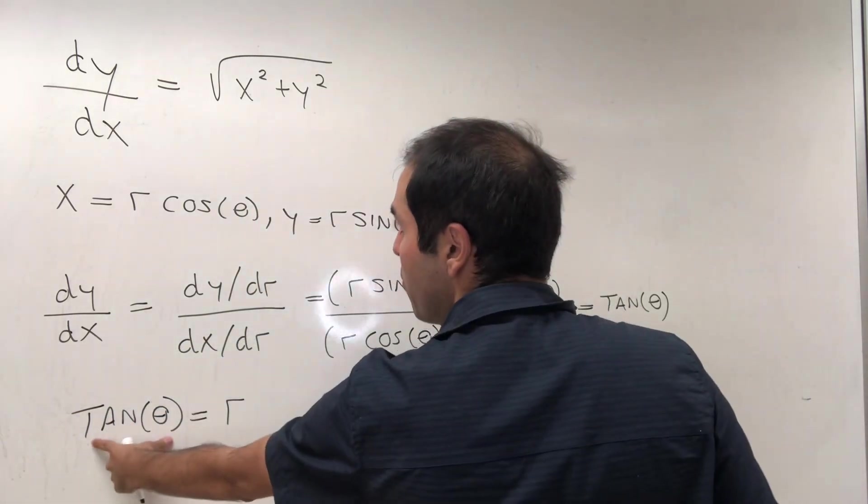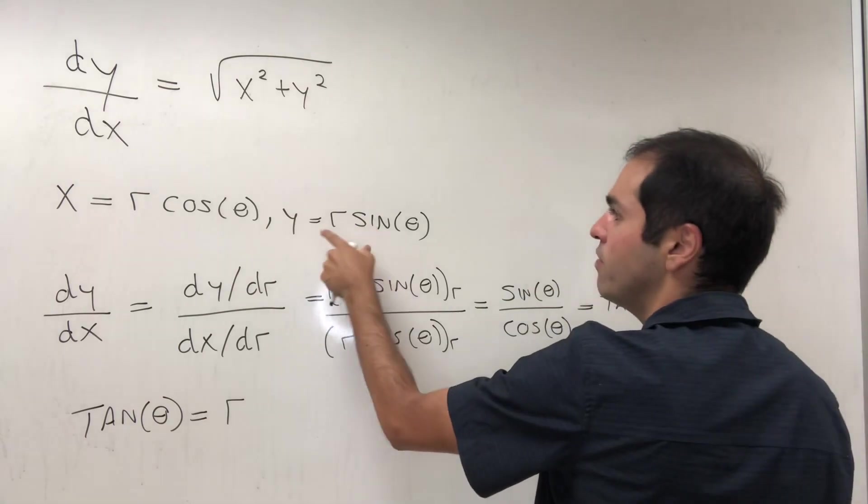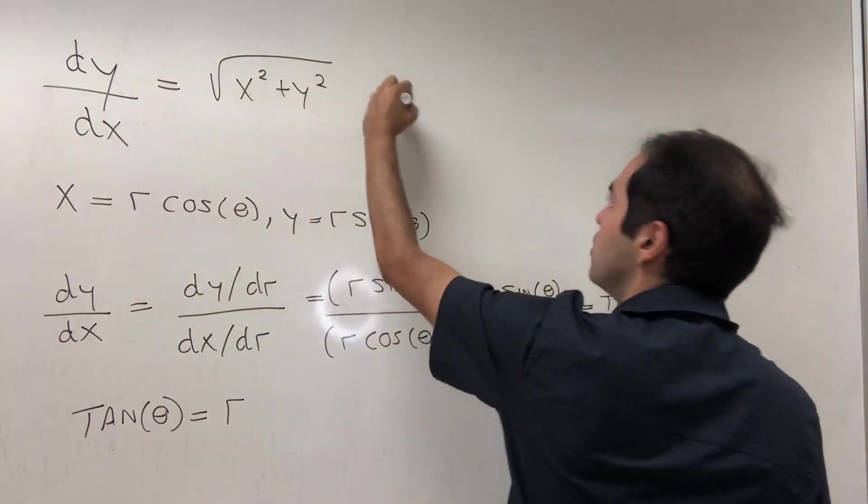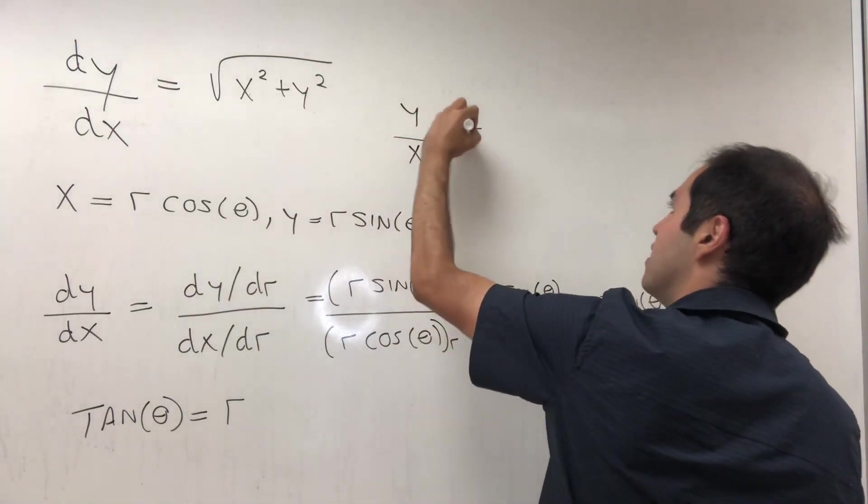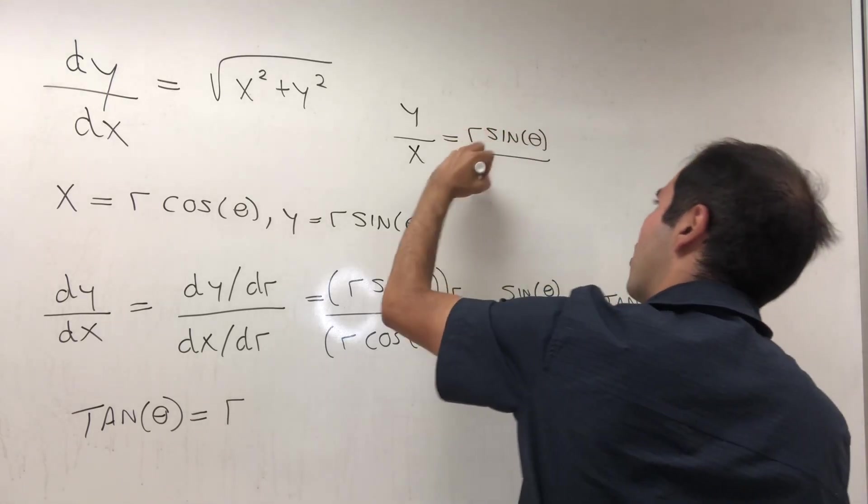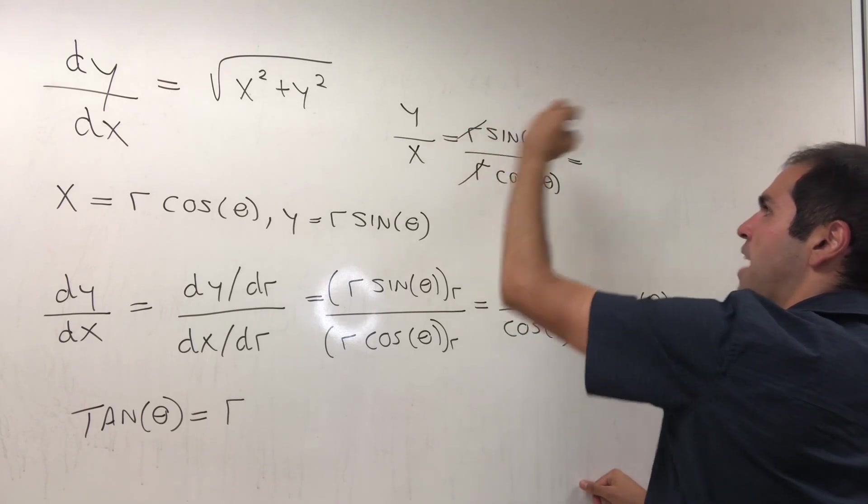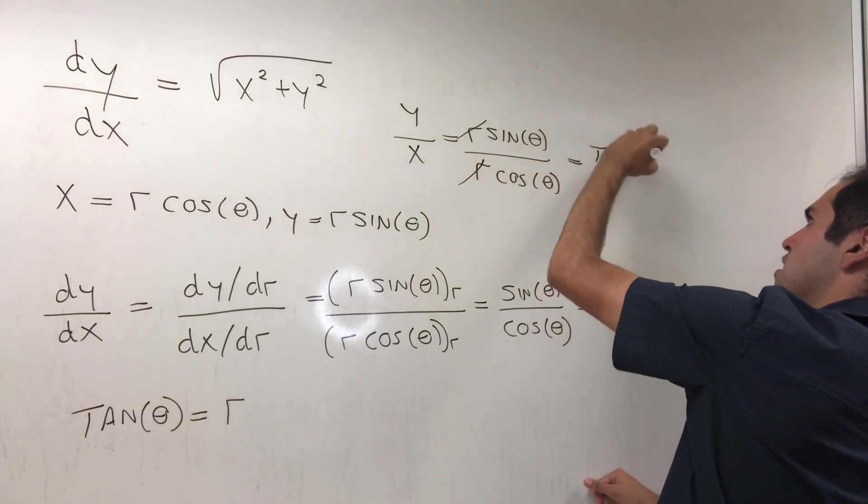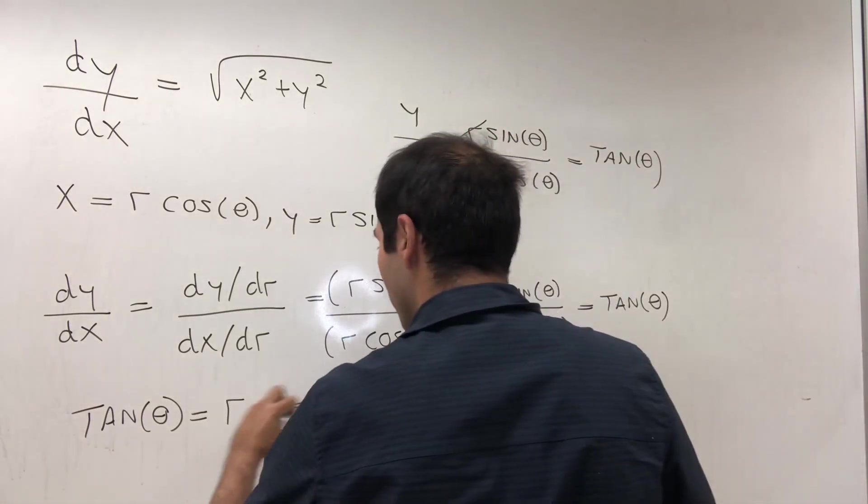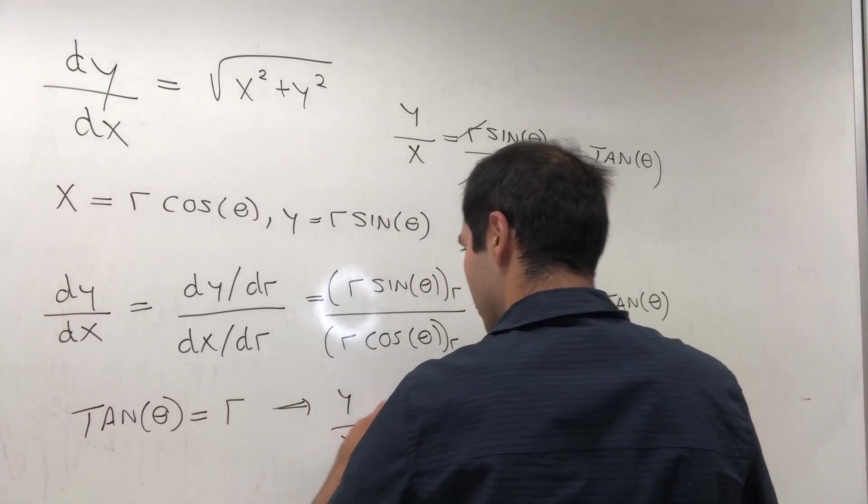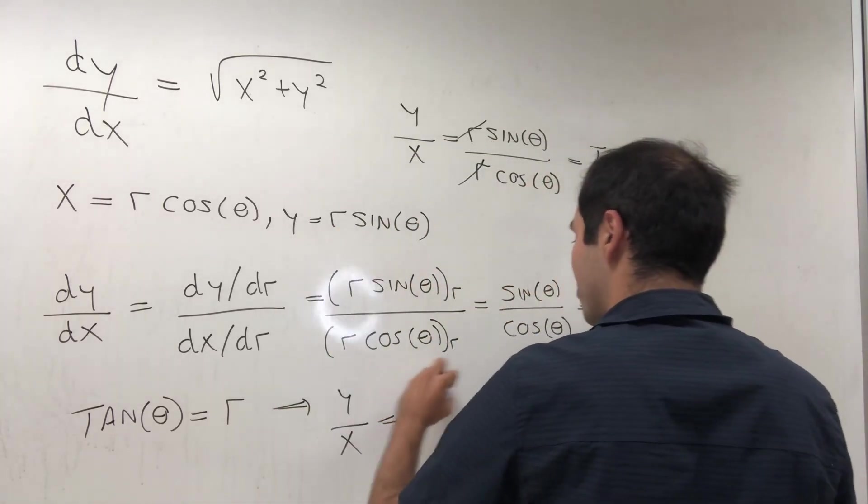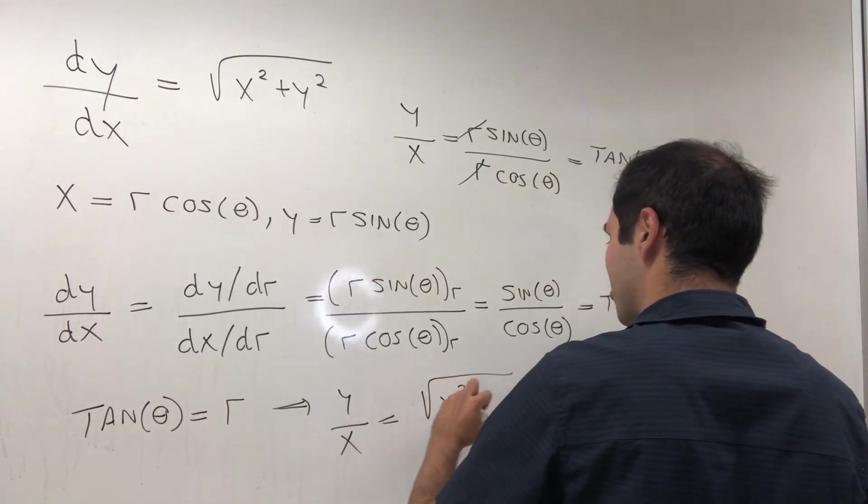But remember, tan(θ) is y divided by x. So if you do y/x, that is r sin(θ) over r cos(θ), which becomes tan(θ). So we get y/x = r, which we can rewrite as √(x² + y²).